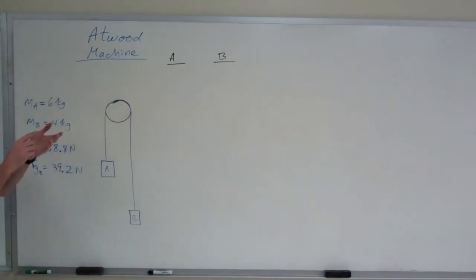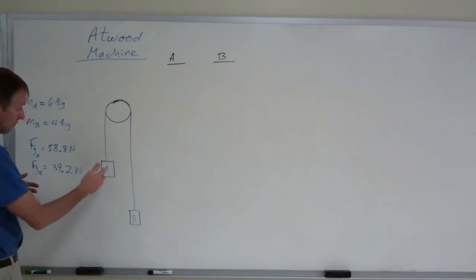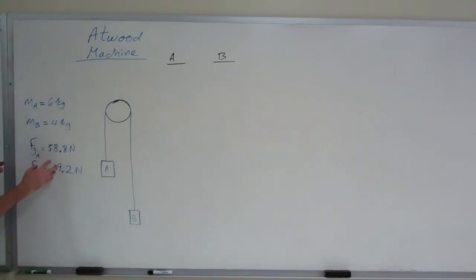Given that we have a string of negligible mass and a pulley of negligible mass that is frictionless, to solve this we need to look at the difference between the weights of block A and block B.